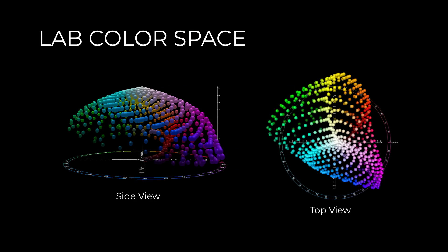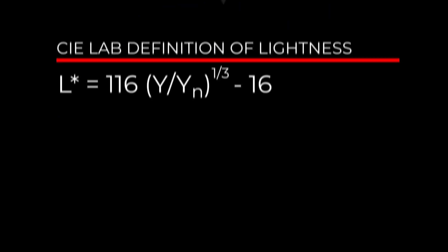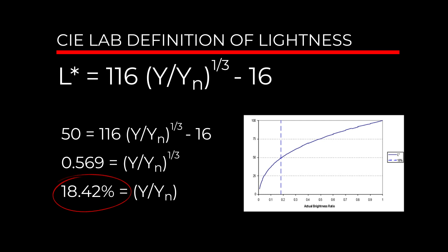Later in the 20th century, we get even more precise printing color spaces like Lab color space. In Lab, color is described in terms of L for luminance and A and B for color opposites — red-green and yellow-blue. Middle gray is literally 50% L value, which once you do the math comes to precisely 18.42% CIEXYZ luminance.